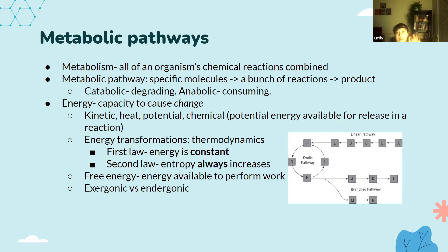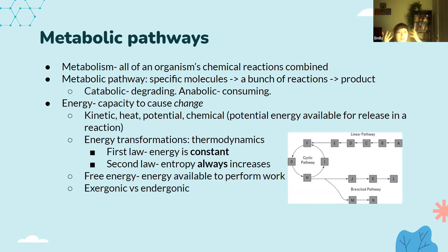There are two main types of metabolic pathways. There is catabolic, which breaks chemicals down, and anabolic, which uses energy and builds chemicals up. In catabolic pathways, because you're breaking the chemical down, you are releasing energy. Anabolic uses energy because you are building things up.